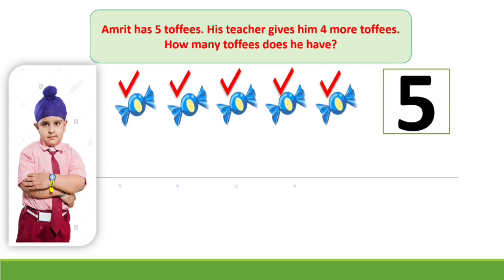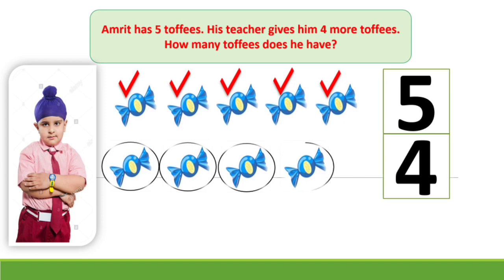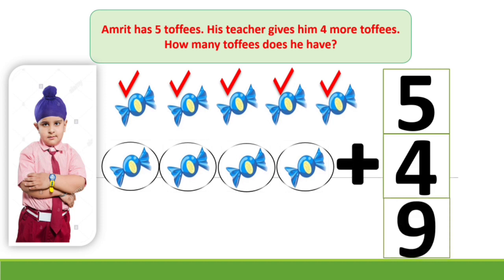Let's see and count these toffees. This is 6, 7, 8 and 9. Amrit has 5 toffees earlier. He got 4 more now. Now he has 9 toffees.